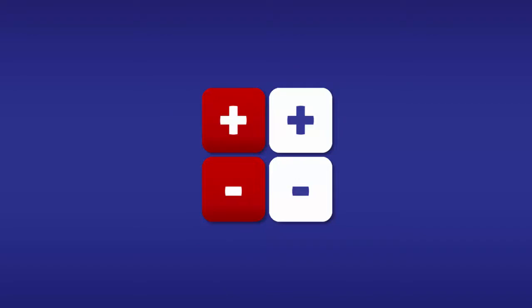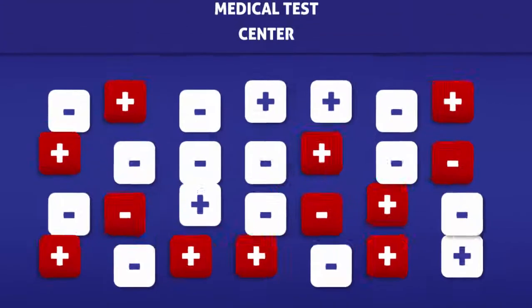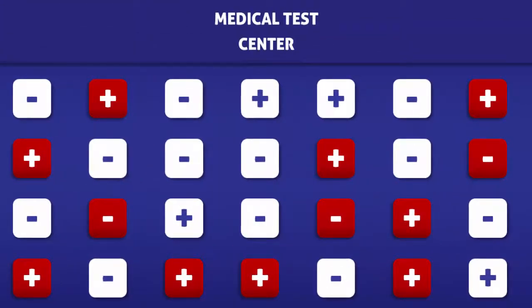To help us learn how to calculate the accuracy of a test, we are going to imagine that a group of people are being tested for a condition. The red squares represent people with the condition and the white squares represent people without it.